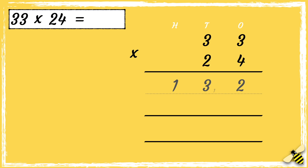Now we need to multiply two tens by three. Remember, we need to use zero as a placeholder in the ones column. Now that we have zero as our placeholder, we can multiply two tens by three — two times three is six. Then we need to work out two tens multiplied by three tens — two times three is six.